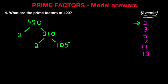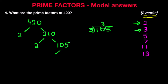Now 105 is an odd number, so it cannot be divided by 2. Let's have a look at the number 3. 105 divided by 3: 3s into 1 are 0, carry over the 1. 3s into 10 is 3, carry 1. 3s into 15 are 5. No remainders. So 105 can be divided by 3 with no remainders, and we are left with 35.